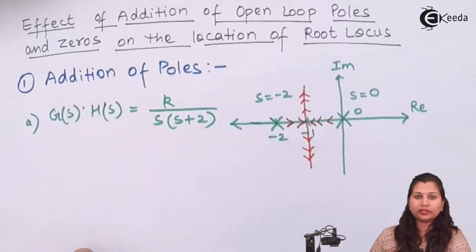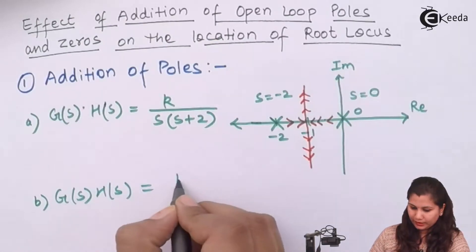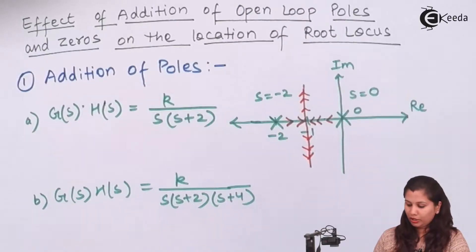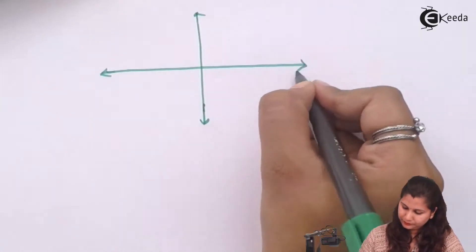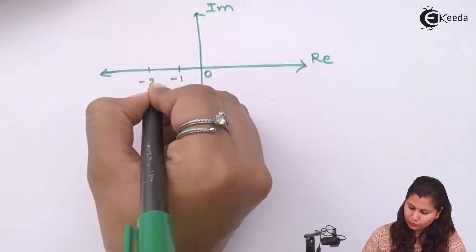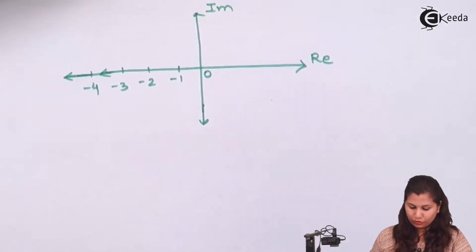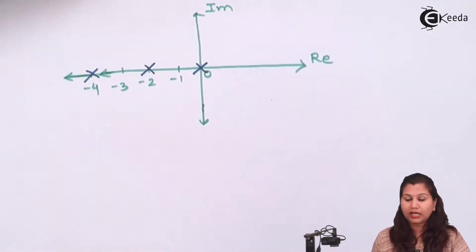Now we are going to add poles to this transfer function, so in the denominator we are going to add terms. The second transfer function we are taking is G(s)H(s) = K upon s(s+2), and we are adding another pole s+4. So now we are going to see what will be the root locus for this. This is the imaginary axis and real axis. This is s equals to 0, minus 1, minus 2, minus 3, and here we will have minus 4. So s equals to minus 2 is one pole, s equals to 0 is one pole, and s equals to minus 4 is another pole.